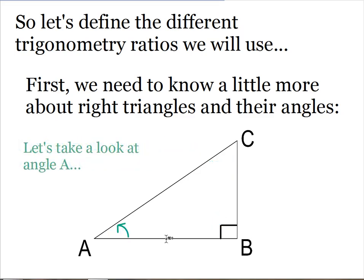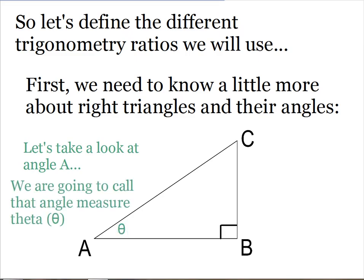So let's take a look at angle A. We're talking this angle down here with a green arrow. We're going to call that angle measure theta. Theta is like a variable. When we use x in an equation to replace a number, theta is used the same way in an angle for a degree measure. So I can say theta equals 30 degrees or whatever my angle measure could be.